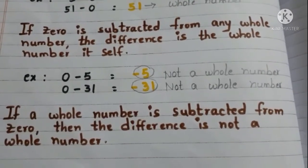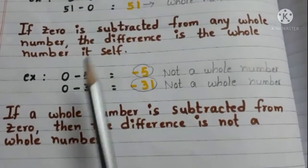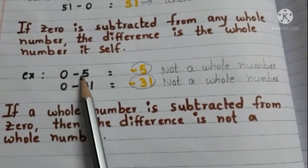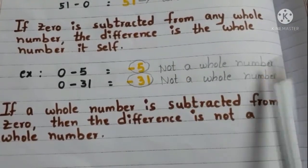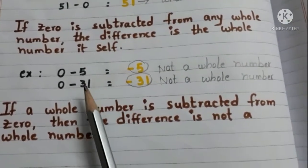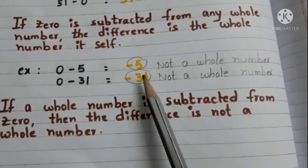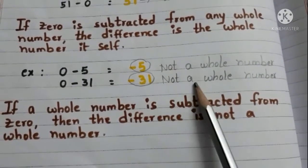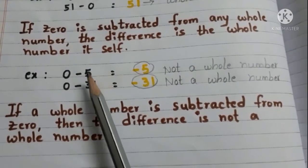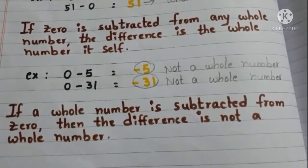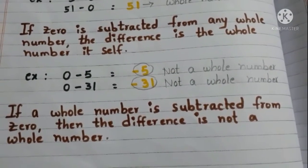Now, let us see another set of examples. Subtract 5 from 0. 0 minus 5 is negative 5, and it is not a whole number. Subtract 31 from 0. 0 minus 31 is minus 31, and it is not a whole number. Here, we can say that if a whole number is subtracted from 0, then the difference is not a whole number.